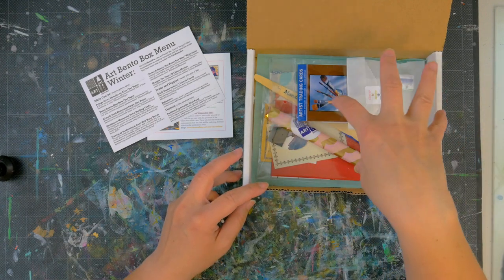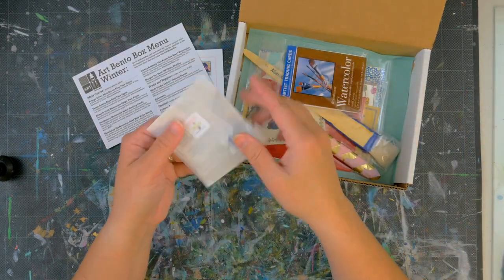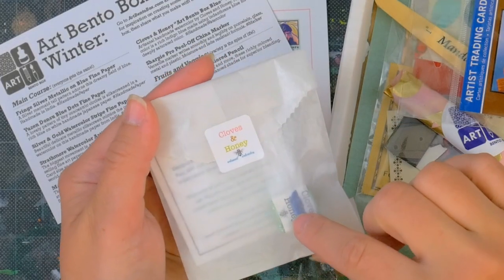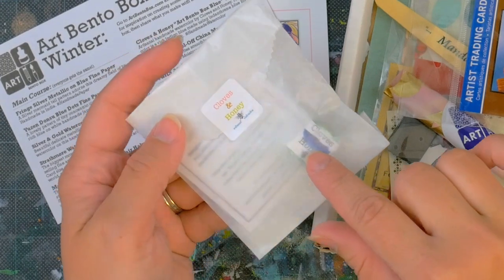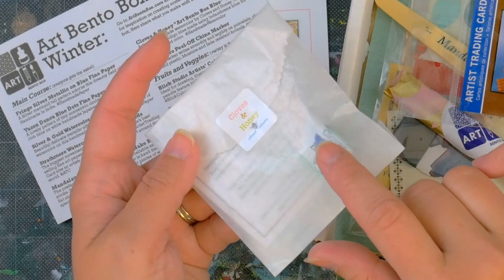This was the exclusive product I was talking about. Cloves and Honey makes artisanal handmade watercolors, and we have Art Bento Box blue, which is actually part of a set called Winter's Quiet, so definitely check that out. We're gonna be using it in just a little bit in the video.